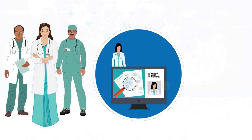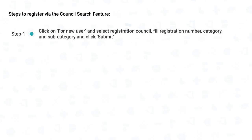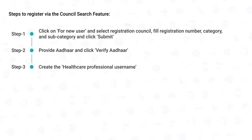Healthcare professionals can register and verify automatically in HPR through their records available with Council and Aadhaar. To register via the Council Search feature: click on 'new user' and select your registration council, fill in your registration number, category and subcategory, and click Submit. The basic information will be auto-populated. Next, provide your Aadhaar and click Verify Aadhaar. On verification, your records will be successfully fetched. Then create the healthcare professional username and proceed. You will find your details pre-filled. Recheck all details such as qualifications and current work, fill in other mandatory fields, and click Save and Next.